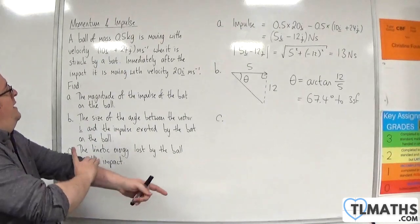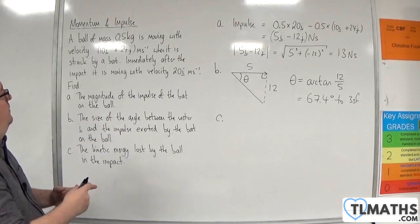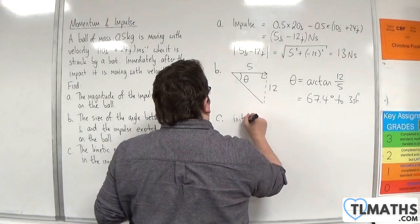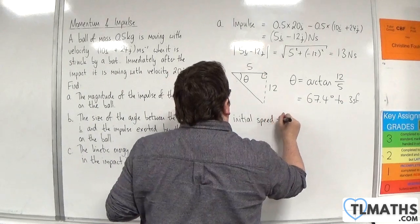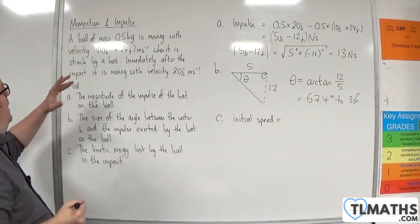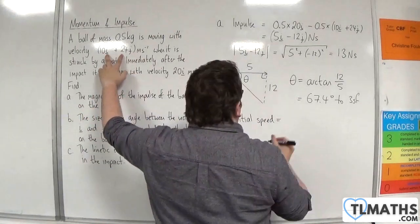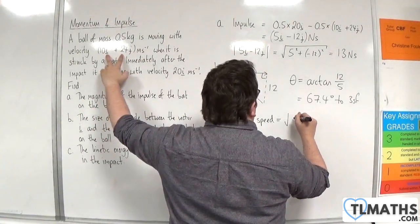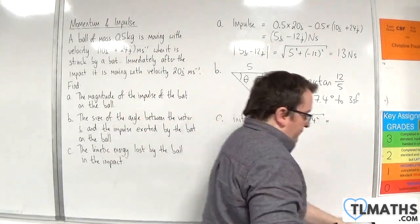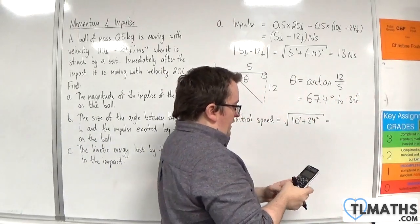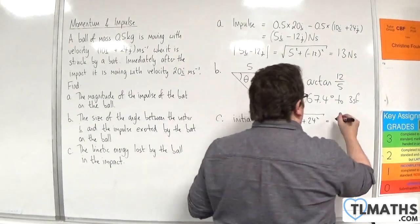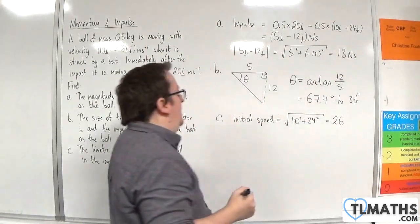So I'm going to need these speeds for this. So we need the initial speed which is going to be equal to the length of that vector. So the square root of 10 squared plus 24 squared. So the square root of that is 26. So that's 26 metres per second.